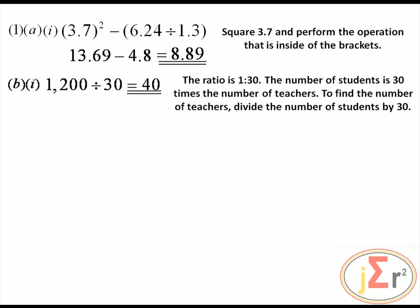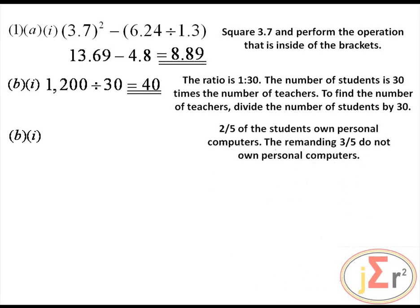Two-fifths of the students own personal computers. How many students do NOT own personal computers? Sometimes a student does not take heed to the word 'not' in the problem. Two-fifths own PCs, so the remaining three-fifths do not. Three-fifths of 1,200 is equal to 720.